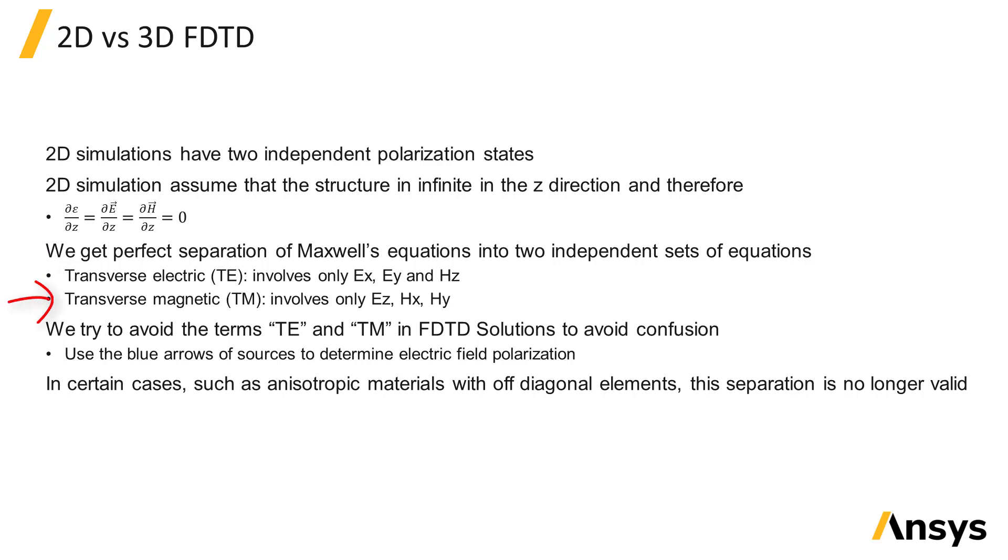and transverse magnetic, or TM, with fields EZ, HX, and HY. In FDTD solutions, we try to avoid the terms TE and TM because they can lead to a great deal of confusion. Instead, it is best to look at the blue arrows of sources in the FDTD design environment to see the direction of E-field polarization.